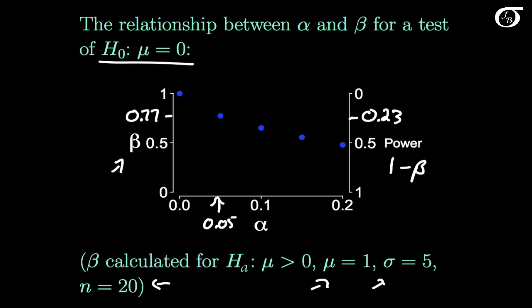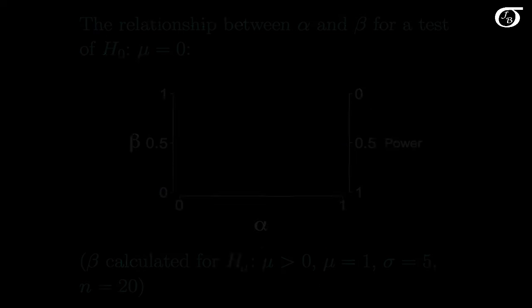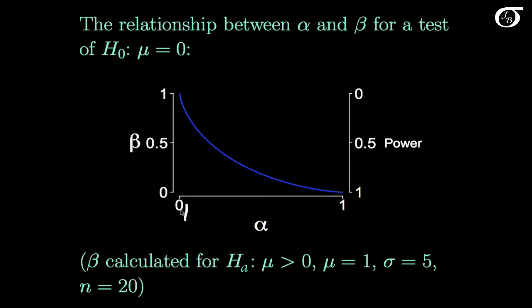Alpha is usually chosen to be a small value, like 0.01 or 0.05, but for completeness let's look at the relationship between alpha, beta, and power over all possible values of alpha. If we choose a value of alpha very near 0, then depending on the other factors, beta will typically be very close to 1 and the test will have very low power. But if we were to choose a value of alpha near 1, beta would be close to 0 and the test would have very high power. But in statistics we do not like making a lot of type 1 errors, so alpha is typically chosen to be a small value, like 0.01 or 0.05.